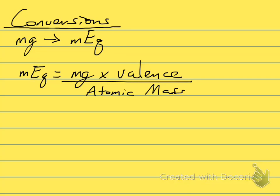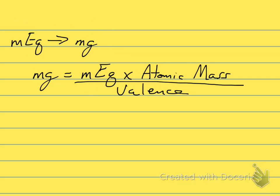And by doing some simple algebra, you can come up with the other formula, which is going from milliequivalents to milligrams. So if you're given a set number of equivalents and you multiply that by the atomic mass and then divide that by the valence, that will give you the total milligrams.